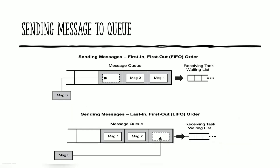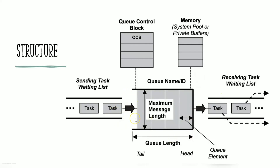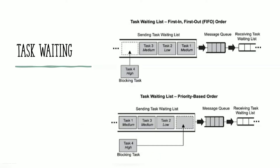For sending messages to a message queue, it can be done in a first-in-first-out way — messages are added to the tail end, which is the normal case. There is another way: last-in-first-out, where the message is put directly at the head portion. This is a special case used when a message is high priority and must be immediately given to the receiving task — in that case it goes directly to the head area rather than the tail.